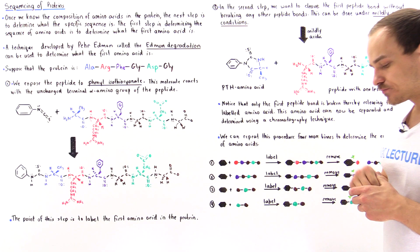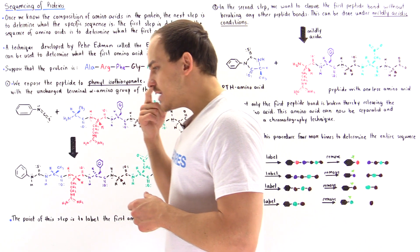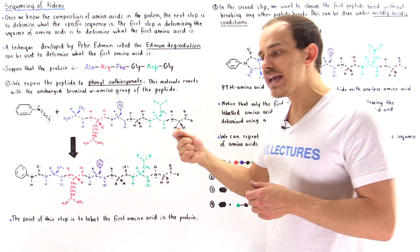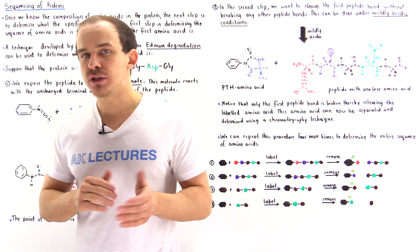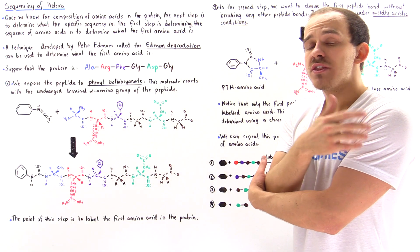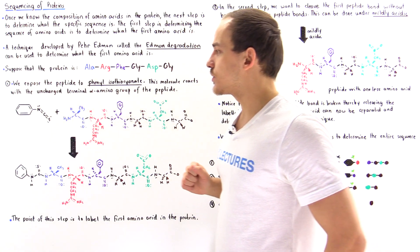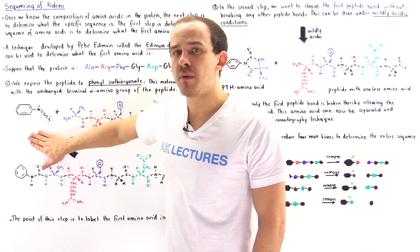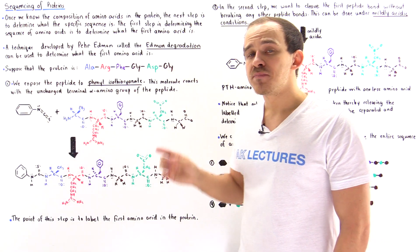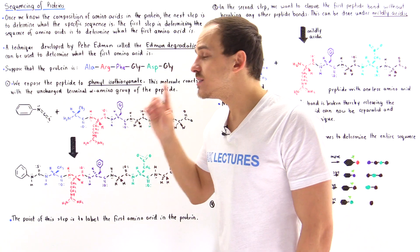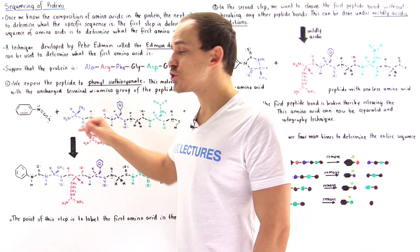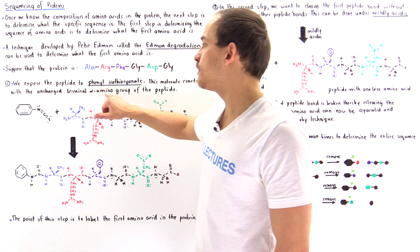In step one of the Edman degradation, we want to label that first amino acid. We do this by reacting it with a special molecule known as phenyl isothiocyanate (PITC). The structure of phenyl isothiocyanate is shown here. If you react this molecule with our polypeptide and the alpha amino group does not have a positive charge, it will react and attach to that uncharged terminal alpha amino group.